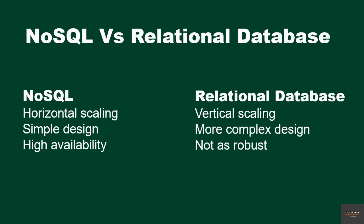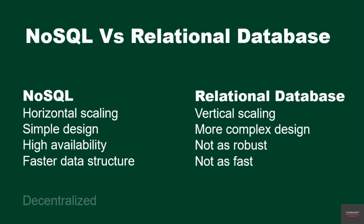The data structure in NoSQL databases makes them much faster in comparison to a relational database. With a NoSQL database, the structure is usually decentralized, while a relational database has a more centralized structure.